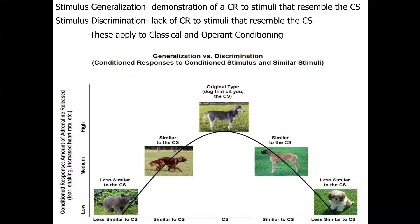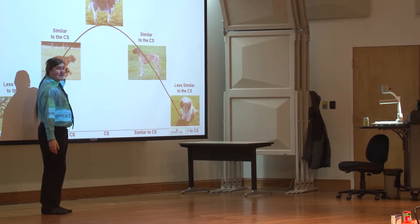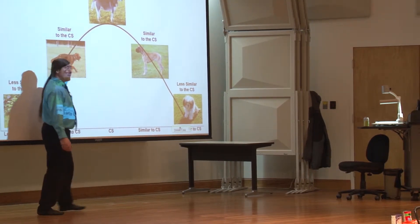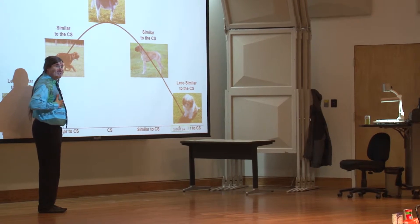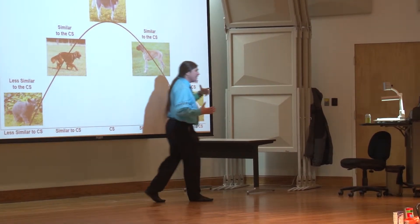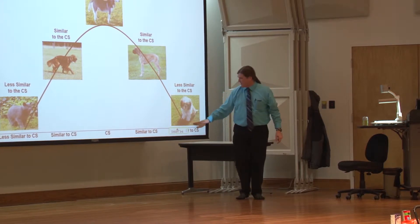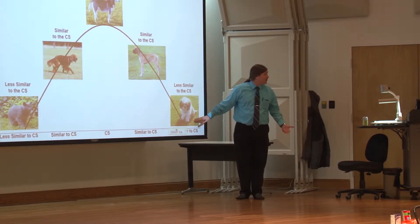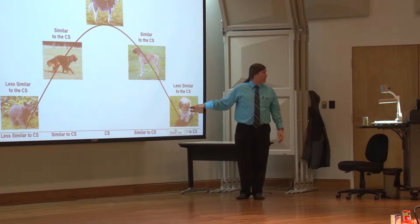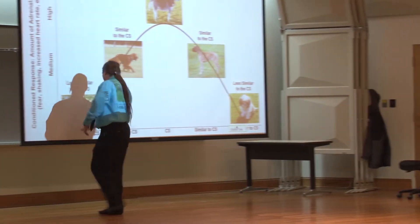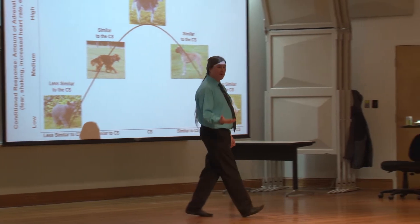That nervousness that was physical was classically conditioned to the dog that bit me. What if I started feeling that way toward a dog that was kind of like that dog — maybe another German Shepherd but not the same one? Then that would be stimulus generalization causing that physiological feeling. If I got far enough away from it in terms of size or appearance, I'm not having the same response. Out here with a kitty — kitty's not similar enough to the dog — that's stimulus discrimination.